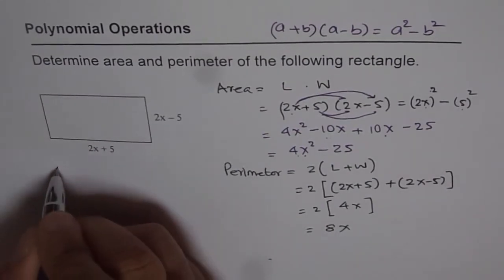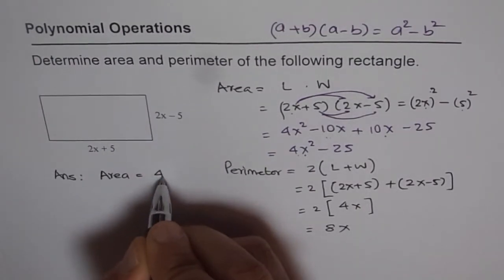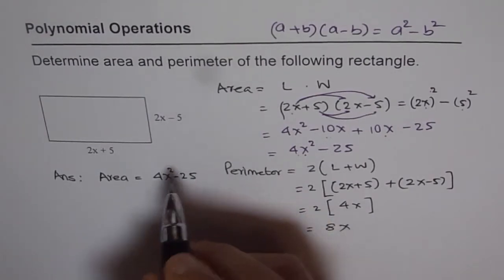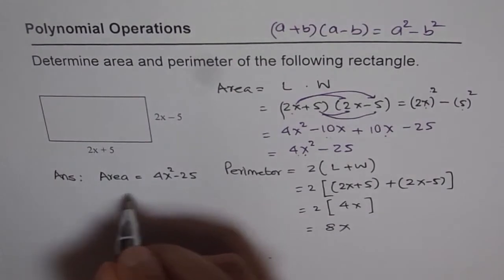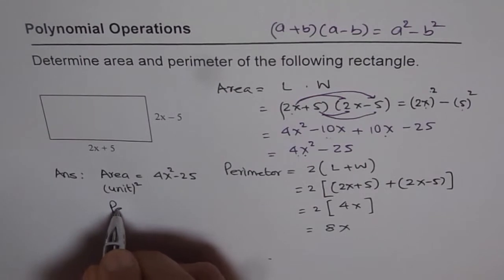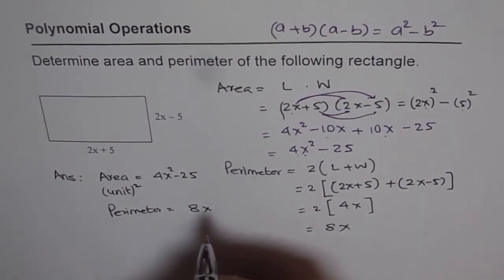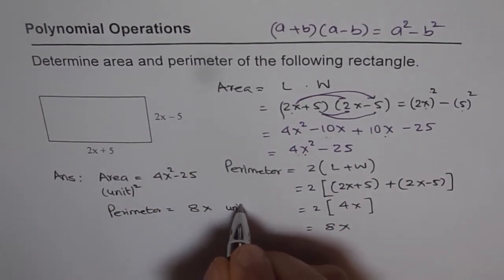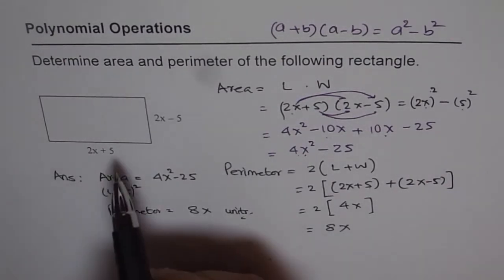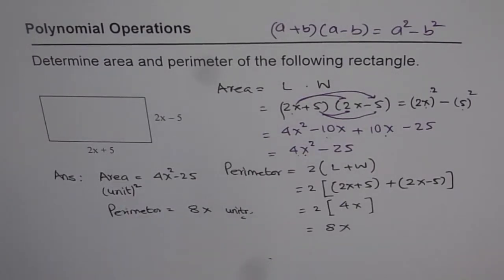Now we can write our answers. So answer is area equals to 4x squared minus 25. It is sometimes good to write units. Although they are not given here, we can say area in unit squared. Now perimeter is 8x and the same as units. Just the word units. Give any units in which the problem should have been given. If they write centimeter, you will write centimeter here and centimeter squared for area.